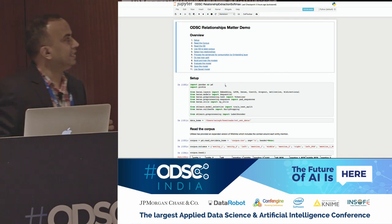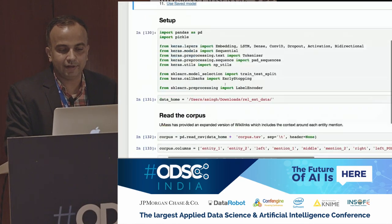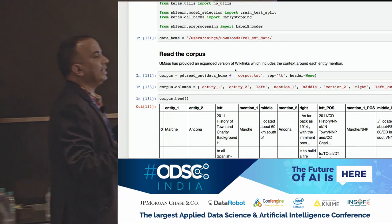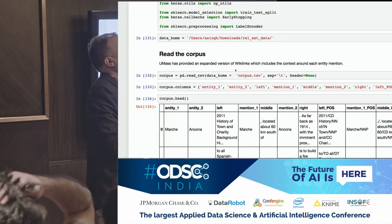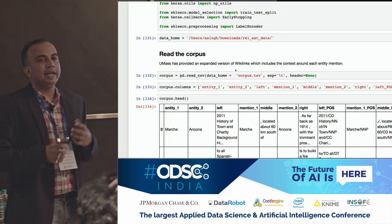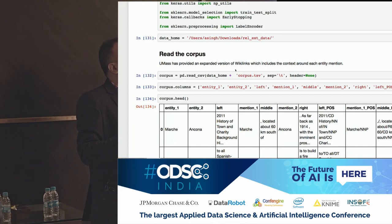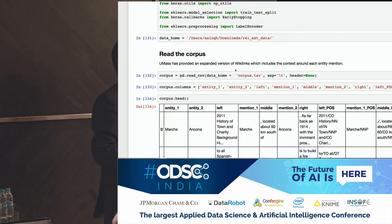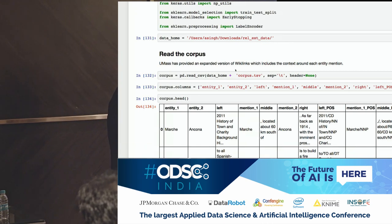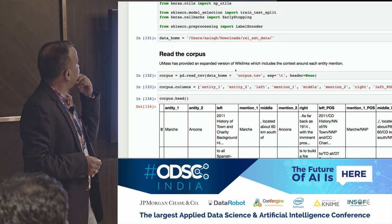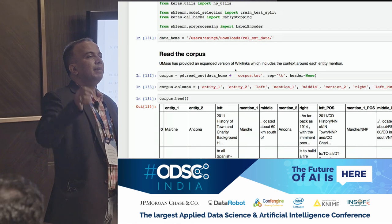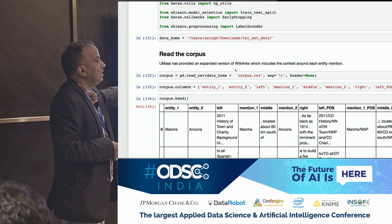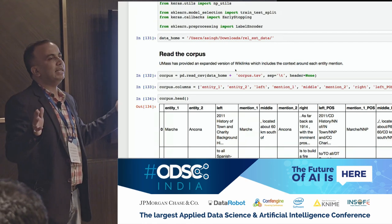If you want to play with these ideas, there are two datasets available. One is the Wikilinks dataset — Google at some point annotated different entities with their corresponding Wikipedia URLs to help disambiguate names within sentences. UMass extended Wikilinks by taking corresponding sentences for these entities from Wikipedia. So you get the whole sentence with two entities in it — entity one, entity two, and the surrounding sentence context.